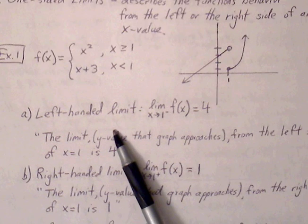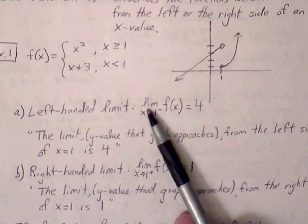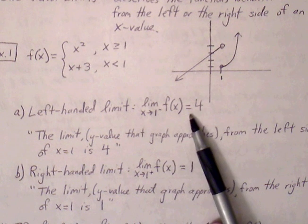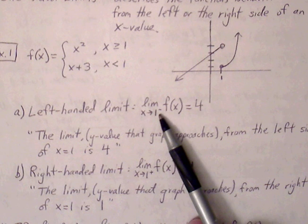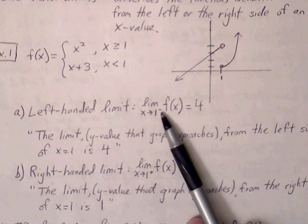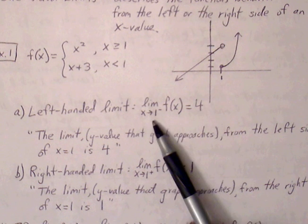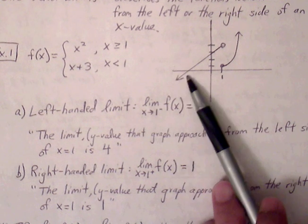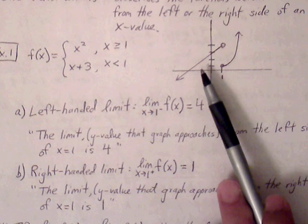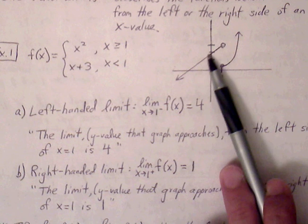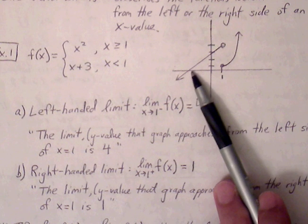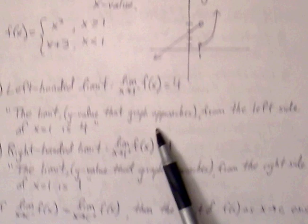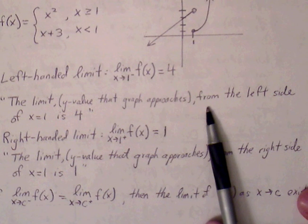For part a, the one-sided limit as x approaches 1 from the left side is equal to 4. The negative exponent notation means we're approaching this x value from the left side. So our target x value is 1, and as we approach from the left, the y value gets closer and closer to 4.